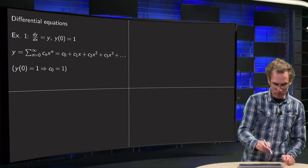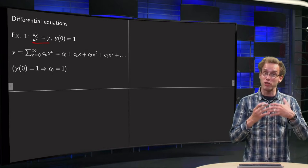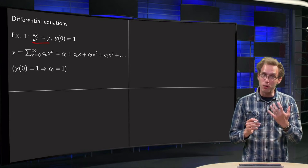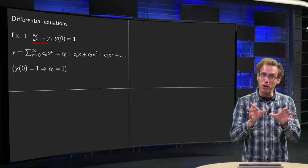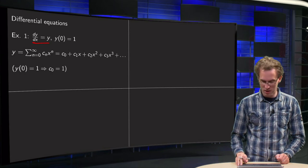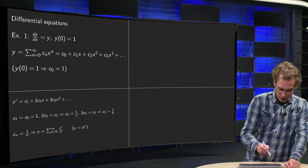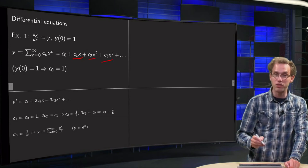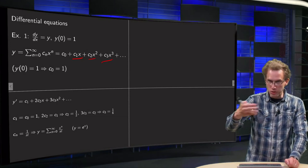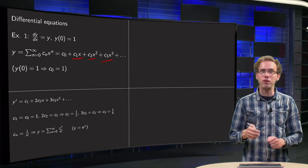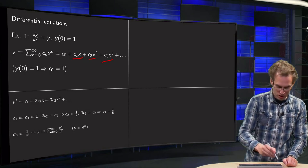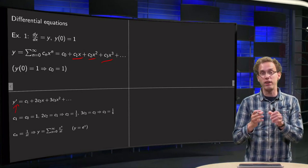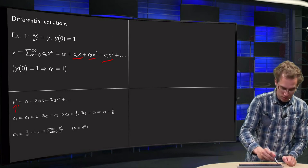We have our differential equation y prime equals y, and our power series solution has to satisfy this. So we compute y prime: y prime equals c1 plus 2·c2·x plus 3·c3·x² and so on. Then we plug that into the differential equation, meaning this y prime has to be equal to y.